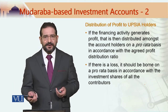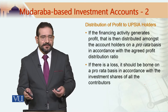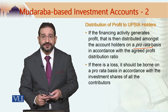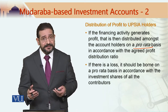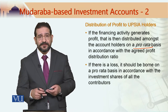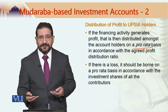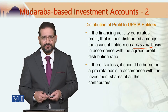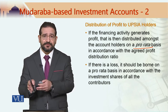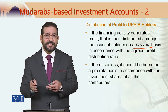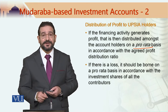Distribution of profit amongst the account holders is almost the same as in our previous example. The profit is distributed on a pro rata basis amongst the holders of unrestricted PSIAs as per the agreed and publicly made available profit distribution ratio. If there is a loss, that loss is borne by the providers of capital. However, through profit smoothing, Islamic banks ensure that profit takes place, and if there is excess profit, it is put into reserves; in case of a loss, those reserves are accessed to ensure investors receive the indicative rate of return.